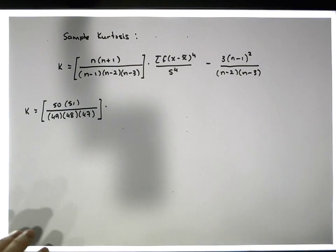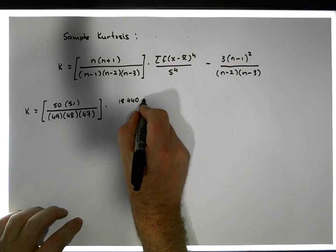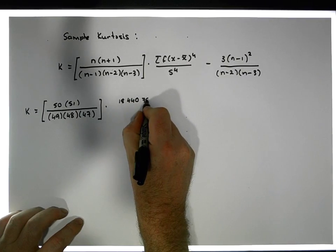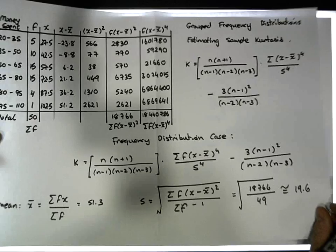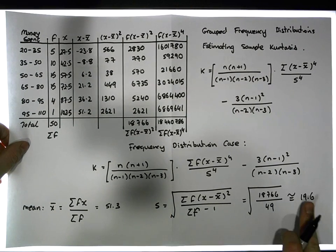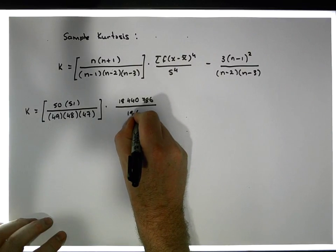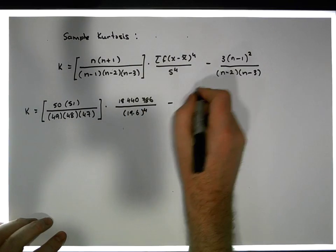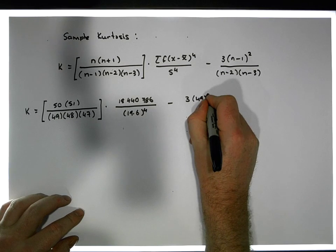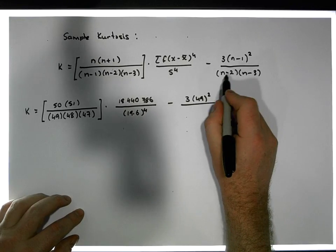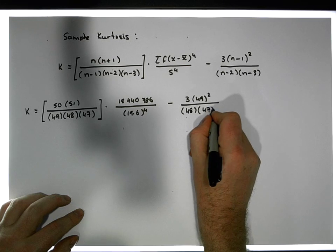We put in 18,440,786 divided by the standard deviation raised to the power of four. Our standard deviation is 19.6, so that's 19.6 raised to the power of four. Then we subtract three times (n minus one) squared — that's three times 49 squared — divided by (n minus two) times (n minus three), which is 48 times 47.